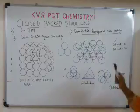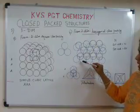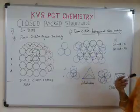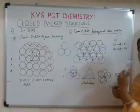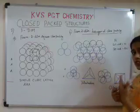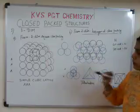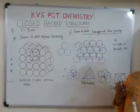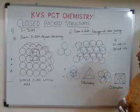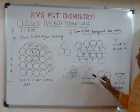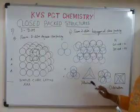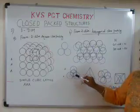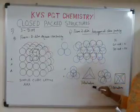Now, from the first layer, take two atoms. The next atom fits into the depression of the first layer. The void generated here — when the sphere from the three-dimensional first layer comes and sets itself in the void of the two-dimensional hexagonal packing — is called the tetrahedral void. It is called tetrahedral because when you join the centers of the surrounding atoms, you get a tetrahedron.